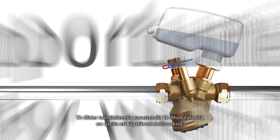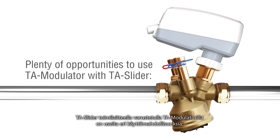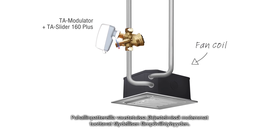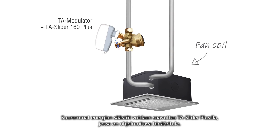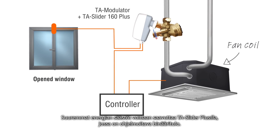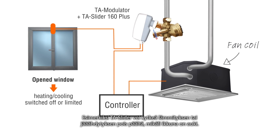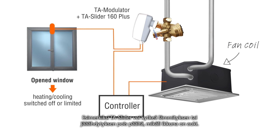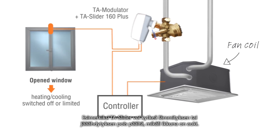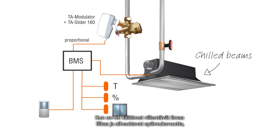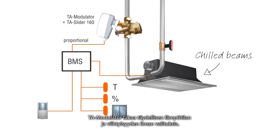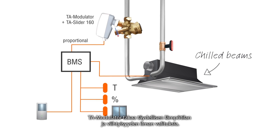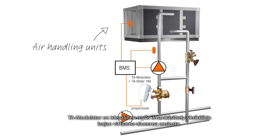There are plenty of opportunities to use TA modulator with TA slider. Both will deliver perfect temperature comfort in systems with fan coils. Higher energy savings can be achieved with TA slider plus, with programmable binary input — for example, TA slider can switch off heating or cooling when the window is open. While on-off control delivers air that is too cold from chill beams and creates discomfort, TA modulator guarantees perfect temperature comfort without complaints.